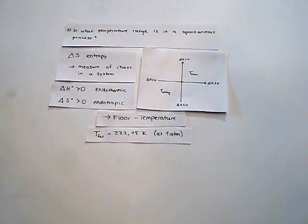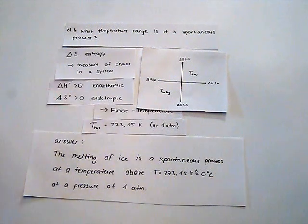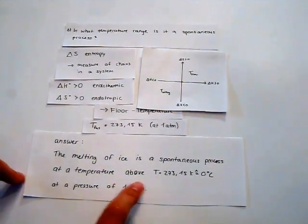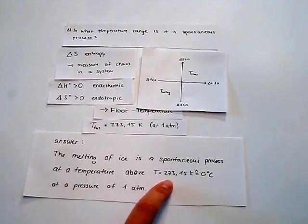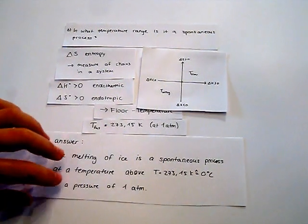And so the answer to this question is that the melting of ice is spontaneous at a temperature above 273.15 Kelvin, which is equal to zero degrees Celsius and a pressure of one atmosphere.